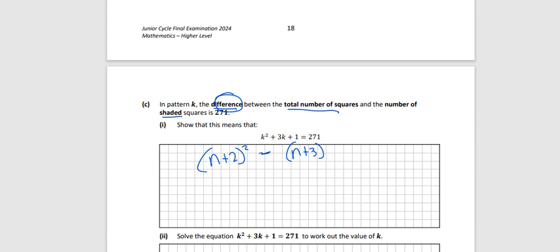So the difference between those two things would just be where you minus one from the other. Now in this case they're just using k instead of n, but really it's the same thing. You could just do it with a k - you probably won't lose too many marks. So they're saying that that is equal to 271, so we just have to show that.